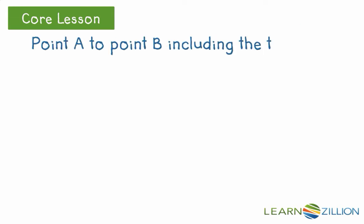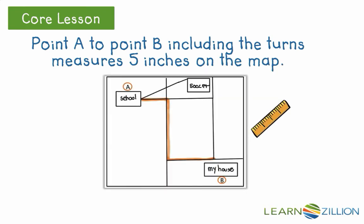The measure of the distance on the map from point A to point B, including turns, is 5 inches. We have to include turns because the distance traveled is by the street, not a straight line from point A to point B.